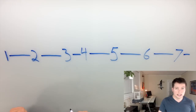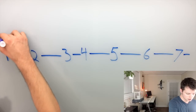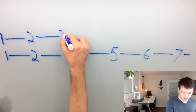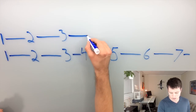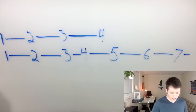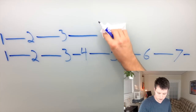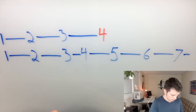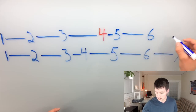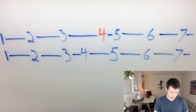A Lydian mode is almost the same thing. It starts on a note, goes over a whole step, whole step, and then here's the difference: note number four is slid over — I wanted to write that in red — and then everything else is exactly the same. That's it. That's the difference between a Lydian mode and the major scale.